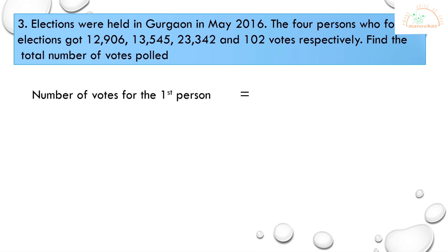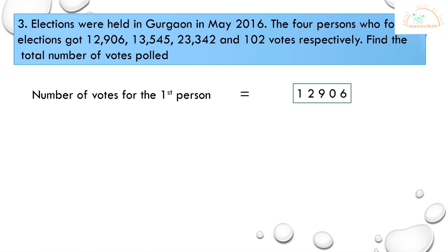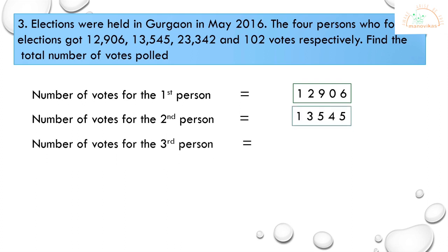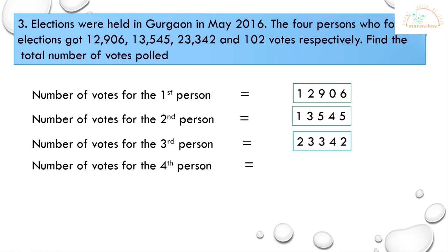Here is the solution. First statement: number of votes for the first person is equal to twelve thousand nine hundred and six. Second statement: number of votes for the second person is equal to thirteen thousand five hundred and forty-five. Third statement: number of votes for the third person is equal to twenty-three thousand three hundred and forty-two. Fourth statement: number of votes for the fourth person is equal to one hundred and two. We have to do the addition to find the total number of votes.